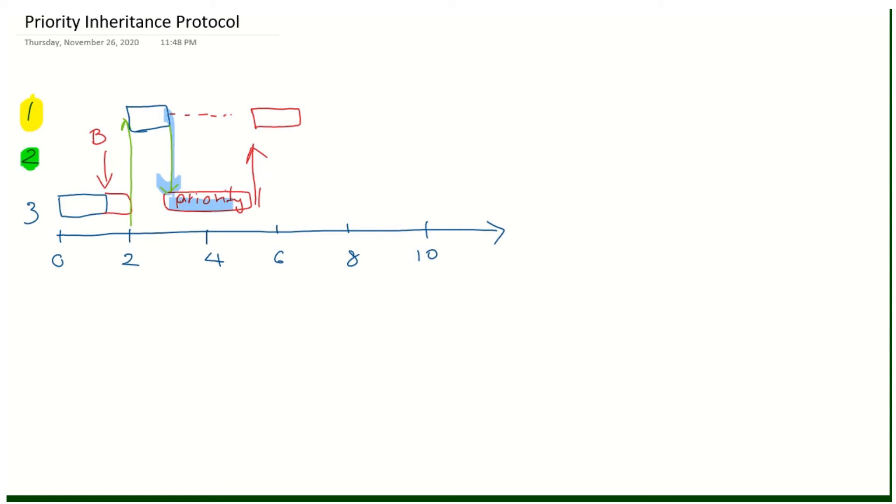when task 3 releases the blocking, task priority 1 goes to normal low priority. Then it gives the chance to task 1 to execute, and task 1 continues its job after the critical